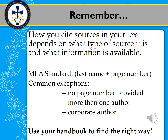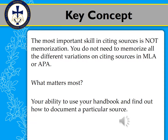Look it up in your handbook. Rather than having you memorize a whole bunch of different ways, you should just know how to use your handbook. A key concept to keep in mind is that the most important skill in citing sources is not memorization. We ran through a whole bunch of examples so you could identify those different elements, but you don't need to memorize how to do a citation — that's way too time consuming. What matters most is your ability to use your handbook, your writer's reference book, and find out how to document a particular source.